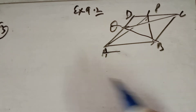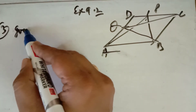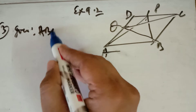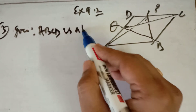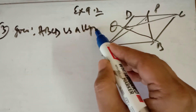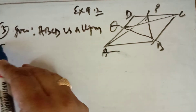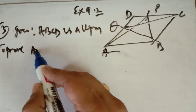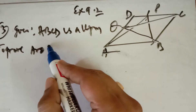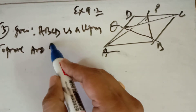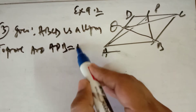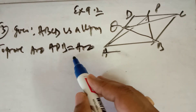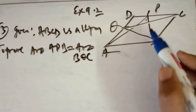Given that ABCD is a parallelogram, you have to prove that the area of triangle APB is equal to the area of triangle BQC.